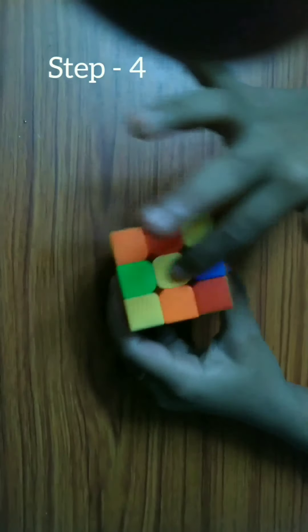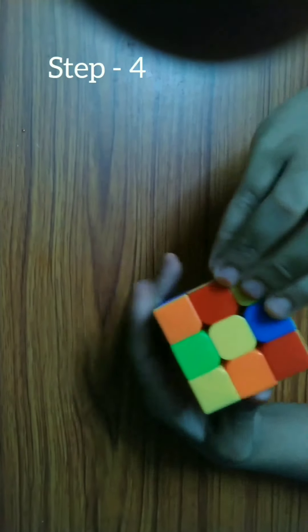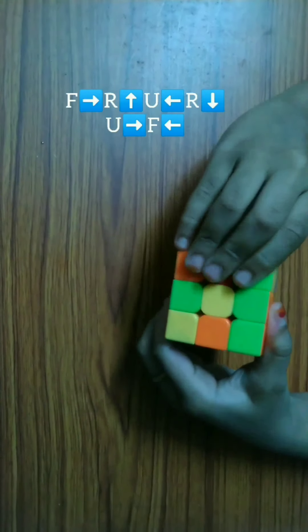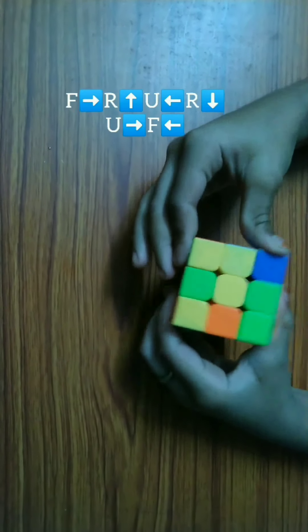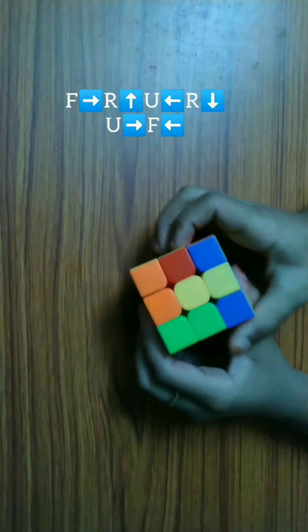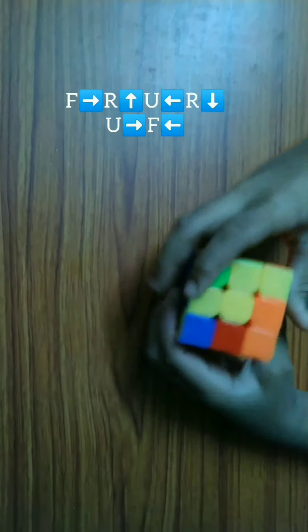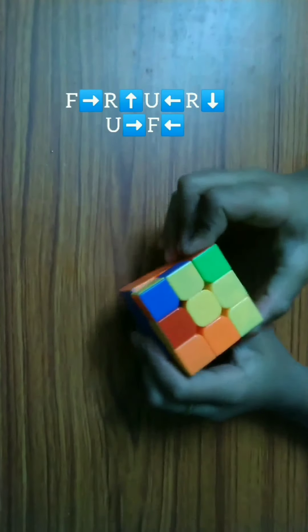Now we need to solve the top cross. Formula is front right, right up, up left, up left, right down, up right, front left. Repeat till you get the cross shape on top.